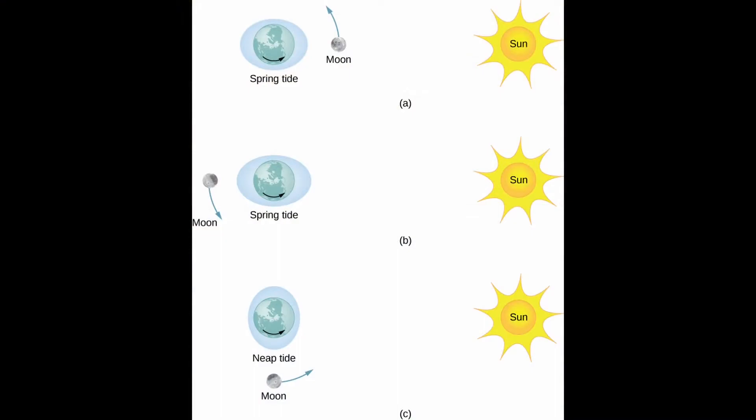Spring tides occur when the sun, moon, and Earth are perfectly aligned, which occurs during a full and new moon phase, while neap tides only occur during the first and third quarter moon phases.